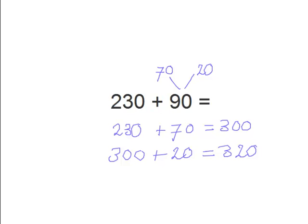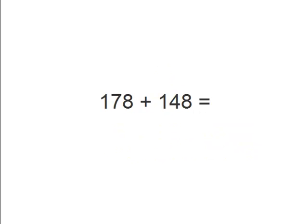So as you can see, we can make a problem easier by splitting up a number. Now we have 178 plus 148. So this time let's try something new. We are going to add 2 to 178 to make it 180, an easier number to work with.